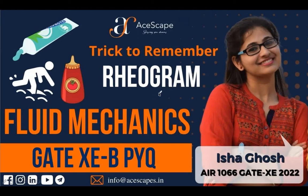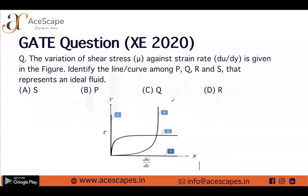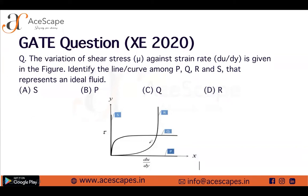You may wonder why it's important to remember this — it's because direct questions come in GATE from this particular topic. As you can see in the XE 2020 paper in fluid mechanics, this question came: it asks the variation of shear stress against the strain rate du/dy, and in the given figure asks us to identify which line or curve among P, Q, R, and S represents an ideal fluid.